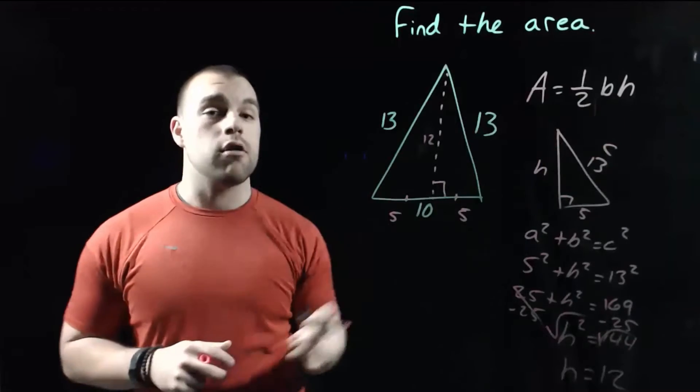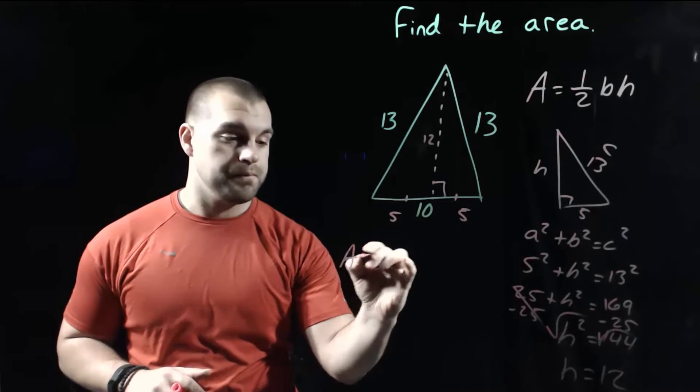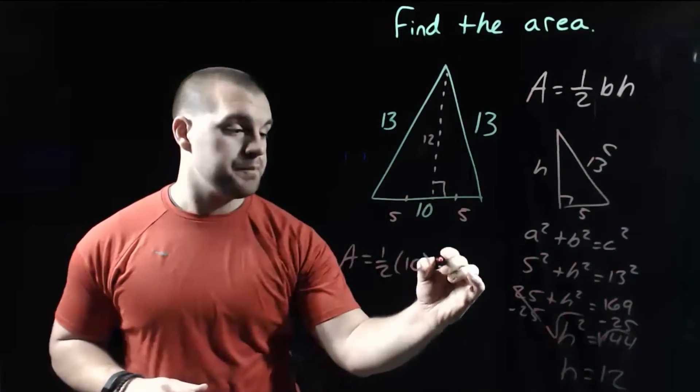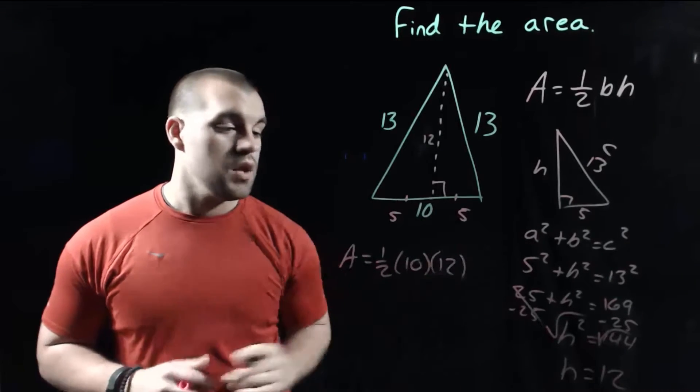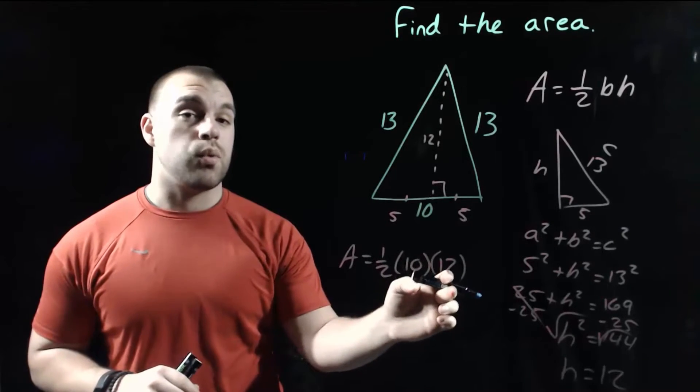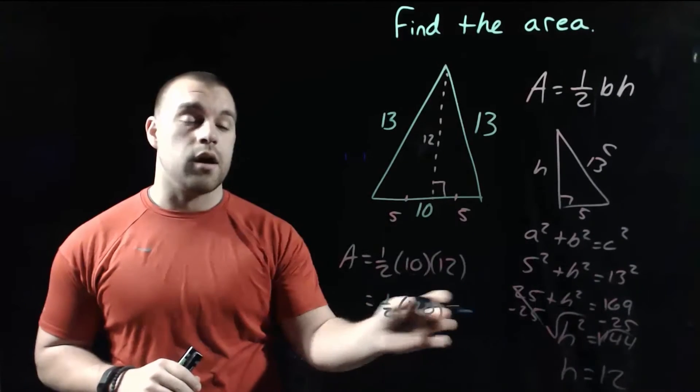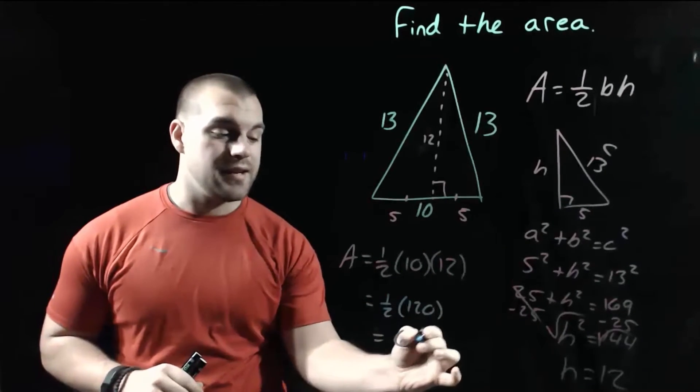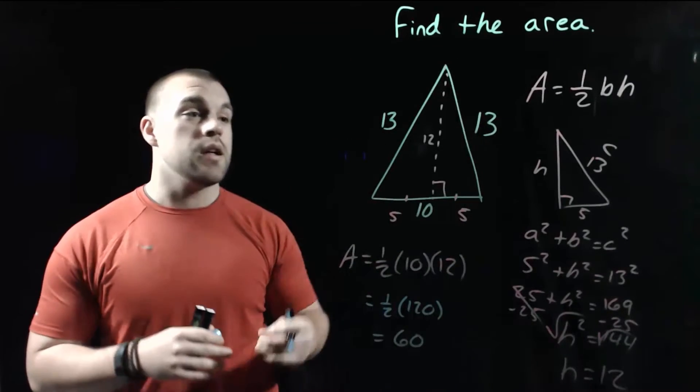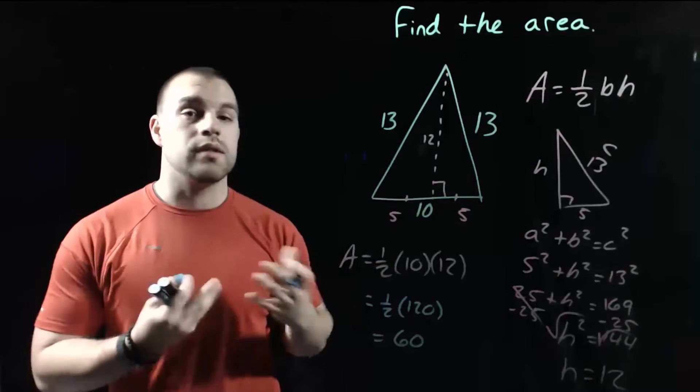And now if we want to find the area, we do one half times the base times the height. The base of our triangle is the 10. And we just found the height of our triangle to be 12. So now we can just multiply these together. If we look at doing this piece by piece, 10 times 12 is 120. And if we do half of 120, that's 60. I guess we don't have a unit on this, but if this was feet, then it would be 60 feet squared. If it were inches, it would be 60 inches squared. So the area of this triangle is 60 units squared.